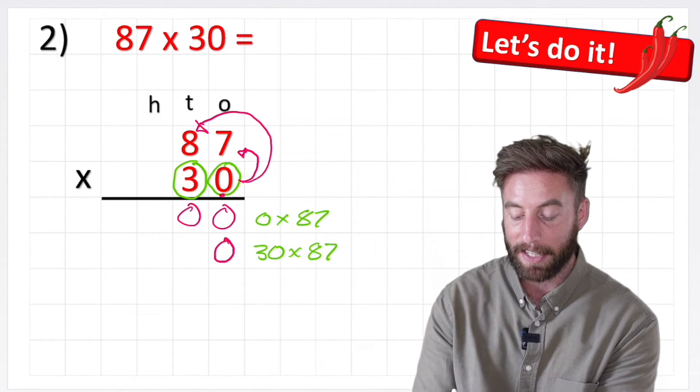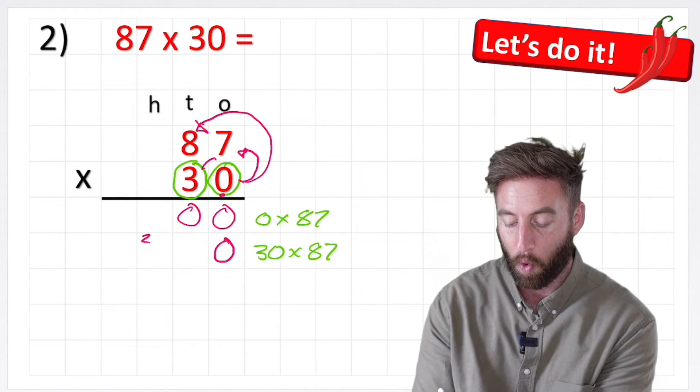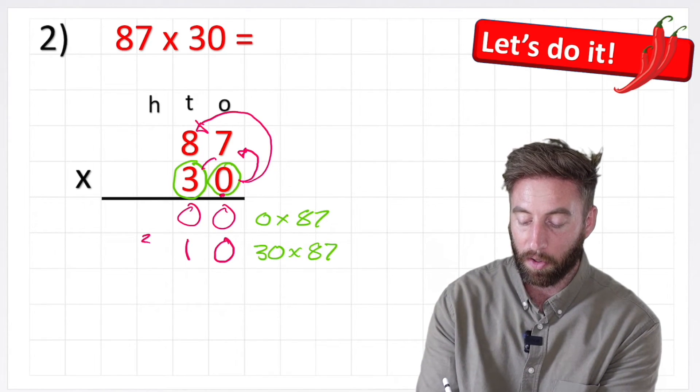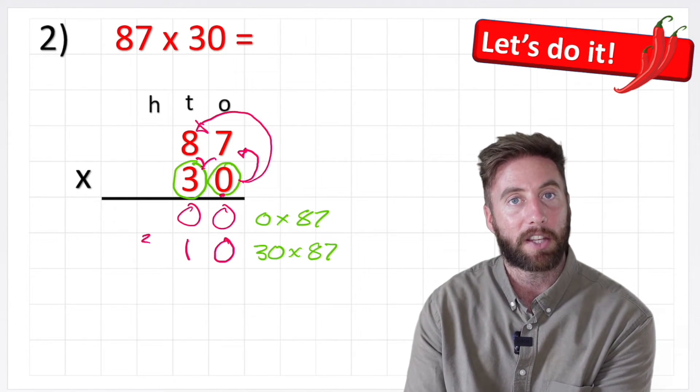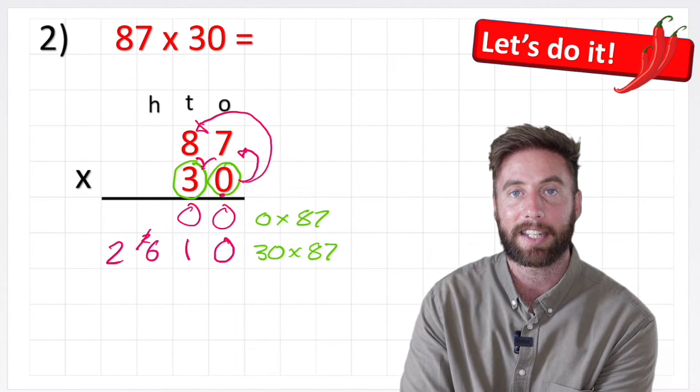Now I can just look at it as a 3 and I can say 3 times 7, and 3 times 7 is 21. Carrying my 2 across and putting my 1 in my tens column. Then I can do 3 times 8. 3 times 8 is 24, but don't forget this 2, so it's 26. Cross the 2 out so we don't add it in the next stage.